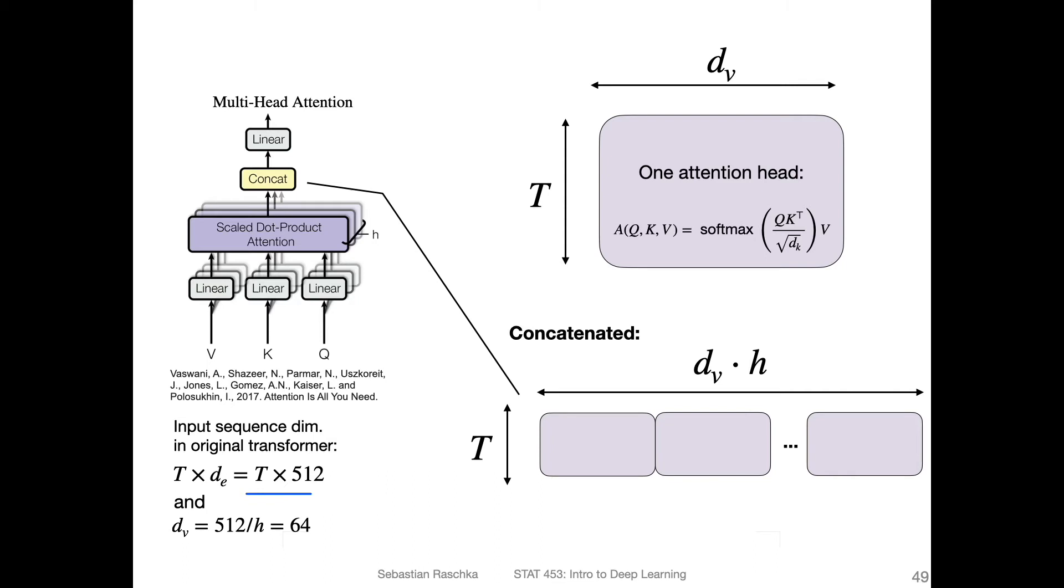In the transformer model that we will be talking about in the next video, they use 512 for the input embedding size. And for the value size, when we have the weight matrix, TV, so we will have the dimensionality of that would be T times dv, where dv is 512.